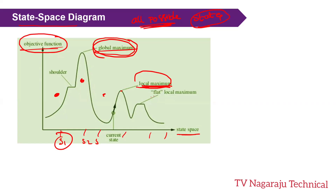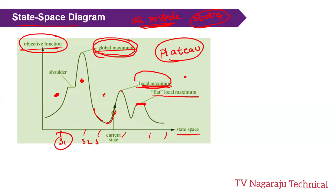Another concept is the flat local maximum, also called a plateau. This is a flat region where neighboring states have the same objective value. If the neighbor state has the same value, it is difficult for the algorithm to decide which direction to move to find the best solution.